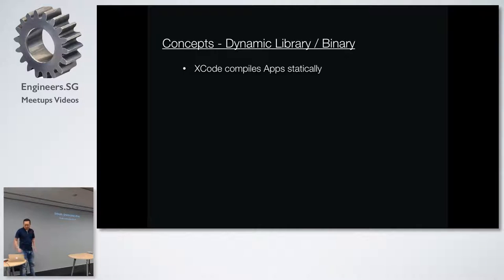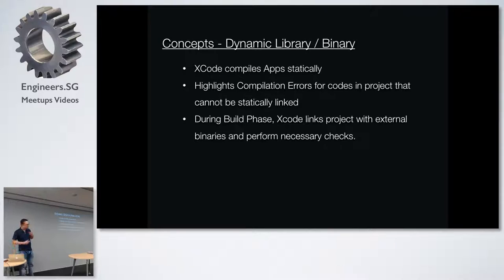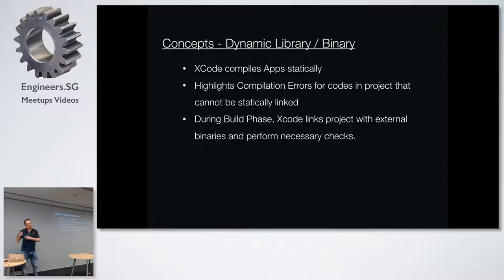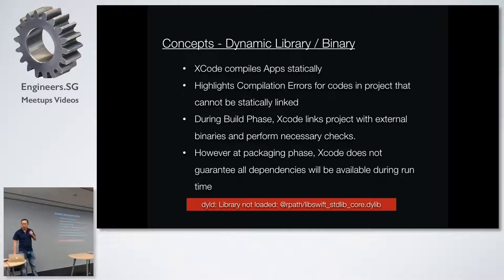Xcode compiles apps statically — that's why it can highlight compilation errors for code that cannot be statically linked. During the build phase, Xcode tries to link project code with external binaries like frameworks and static libraries, and performs the necessary checks. Xcode will also tell you if there are any duplicated binaries. However, in the packaging phase, Xcode does not guarantee all dependencies will be available at runtime — that's why sometimes when you build apps, especially in Swift, you might encounter a dylib not found error.